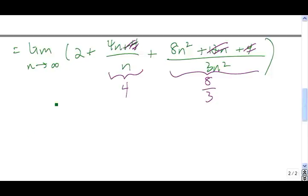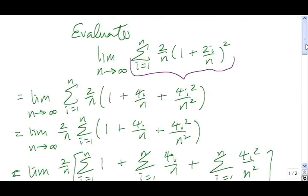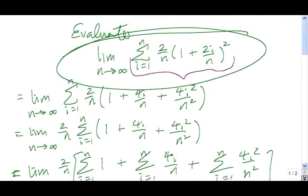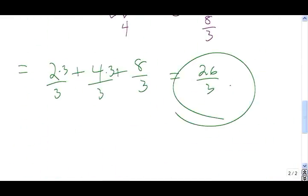So here, the value of the limit is 2 plus 4 plus 8 over 3. So if we get a common denominator here, we have 6 plus 12 plus 8 divided by 3, that gives us 26 divided by 3. So, the value of this limit here is equal to 26 divided by 3.